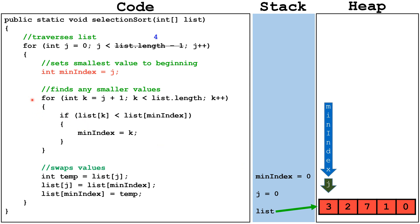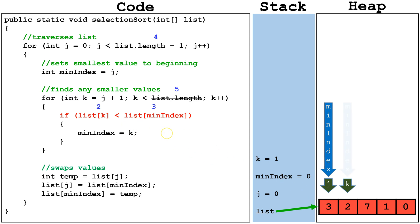This internal for loop will then begin looking for a smaller value in the unsorted portion of the array. We'll set k equal to j plus 1. We're going to check is k less than list.length, which we have to check through the remainder of the list. list.length will always be 5. k is less than 5, so now we check is list index k, which is pointing at a 2, smaller than list min index, which is pointing at a 3. It is, so we're going to set min index equal to k.